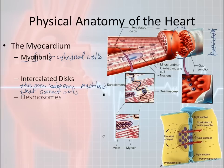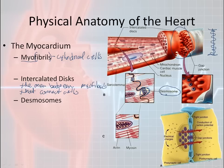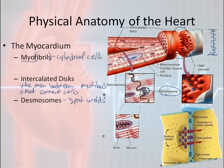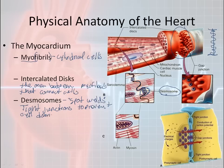The next structure is called a desmosome. Desmosomes are located within the intercalated disc. The best way to describe them is as spot welds between the cylindrical cells, so that during the rigors of forceful contraction, they prevent the cells from being ripped apart from each other. These are tight junctions to prevent cell damage during vigorous contraction.